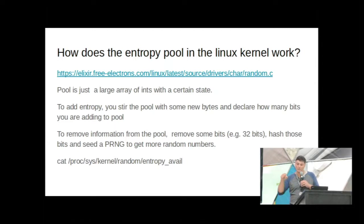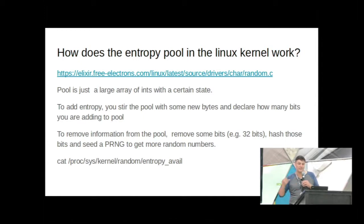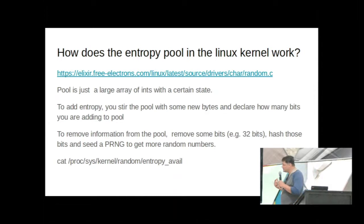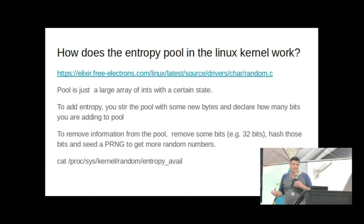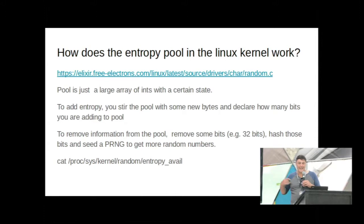Even if I know the state of the pool at one particular point in time, I can build a tree. Maybe three or four interrupts happened in between, each adding one bit — I can build a little tree to explore the state space. The pool stirring algorithm is completely deterministic. To add entropy, you stir the pool with new bytes and declare how many bits you're adding. A lot of people think that catting something into /dev/random adds entropy — that is not correct. It stirs the pool, but it doesn't add entropy.